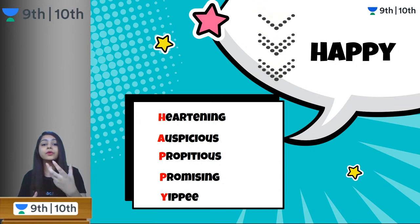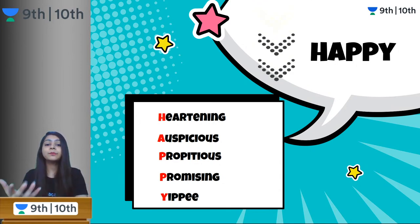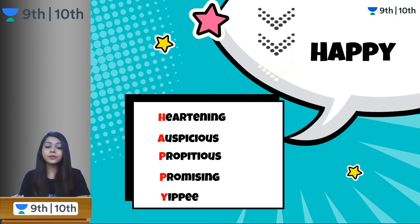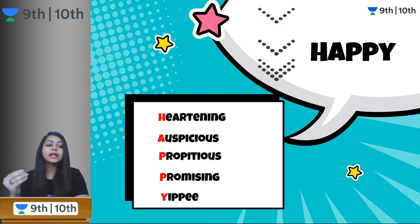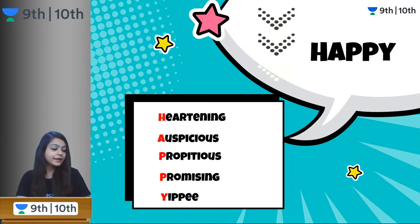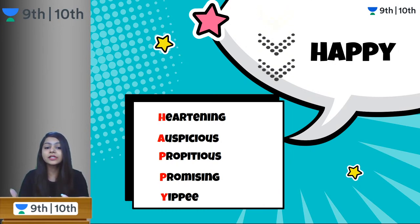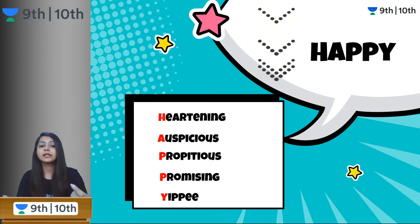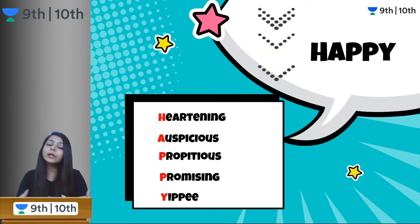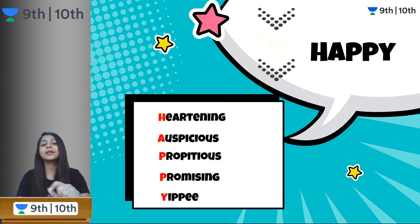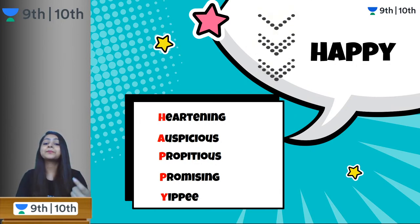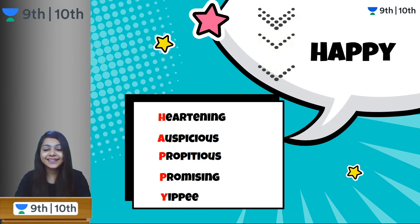Auspicious gives you good omens and brings good luck. Propitious also comes from the word prosperous — something that brings prosperity. Promising: we always wait for events which are promising. And Y for yippee — the best exclamatory word in English. Whenever you are very happy, you say yippee.